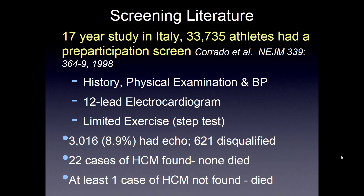Other literature on screening includes a 17-year study in Italy that looked at 33,735 athletes with pre-participation screening. This older study from 1998 included history, physical exam, blood pressure, a 12-lead EKG, and a limited exercise step test. 3,000 had an echo, and 621 were disqualified. 22 cases of hypertrophic cardiomyopathy were found and none of them died. At least one case of hypertrophic cardiomyopathy was not found, and that person did die.